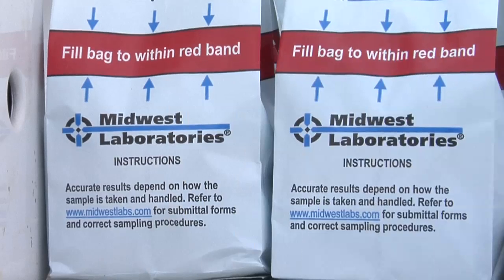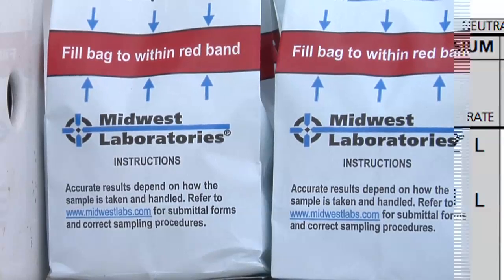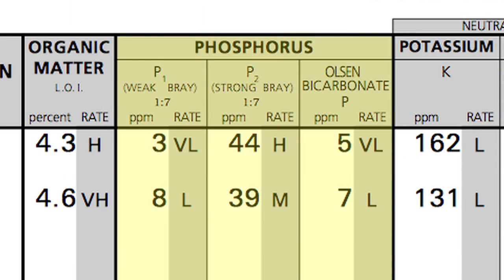There are a lot of different phosphorus tests being used by labs across our country. Probably the most common two are the Bray tests and the Olsen tests, that's why we're talking about them. But there are some other ones out there too. We just have to see those get proven over the years, like Bray and Olsen have proven to be fairly reliable in certain situations.